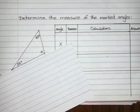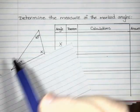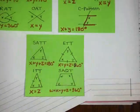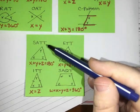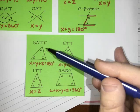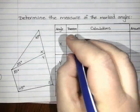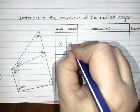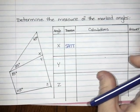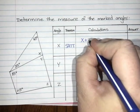If I look at the triangle on the top, I know two of those three angles. Because of SATT — the sum of the angles in a triangle — those angles add to 180 degrees. So I'm going to use SATT as my theorem.